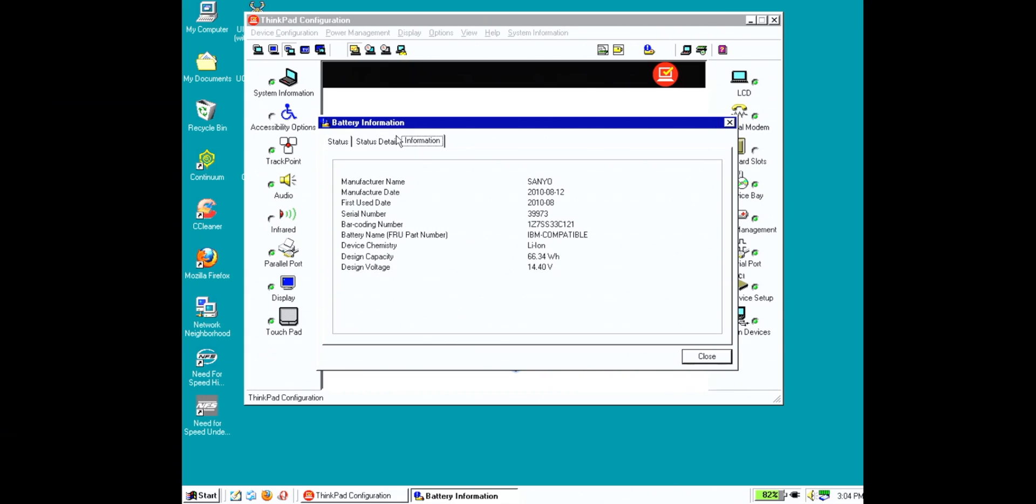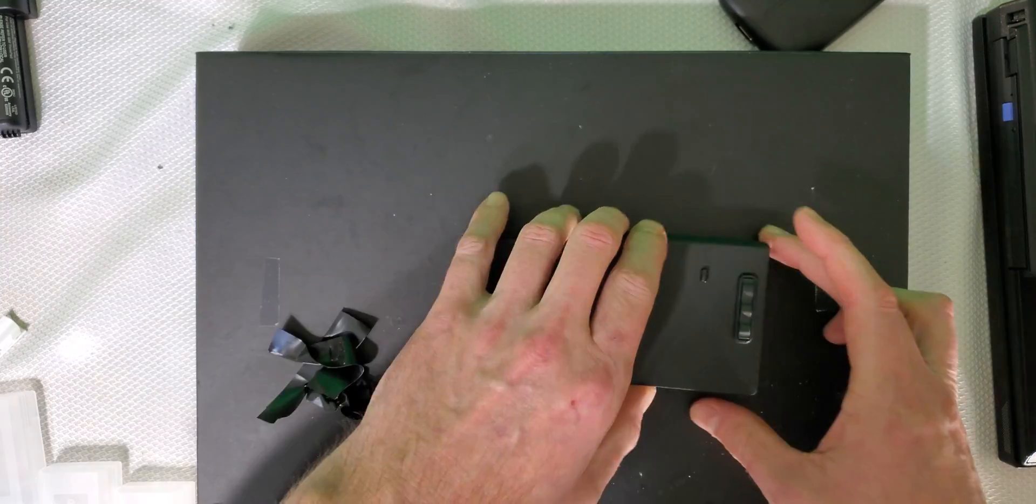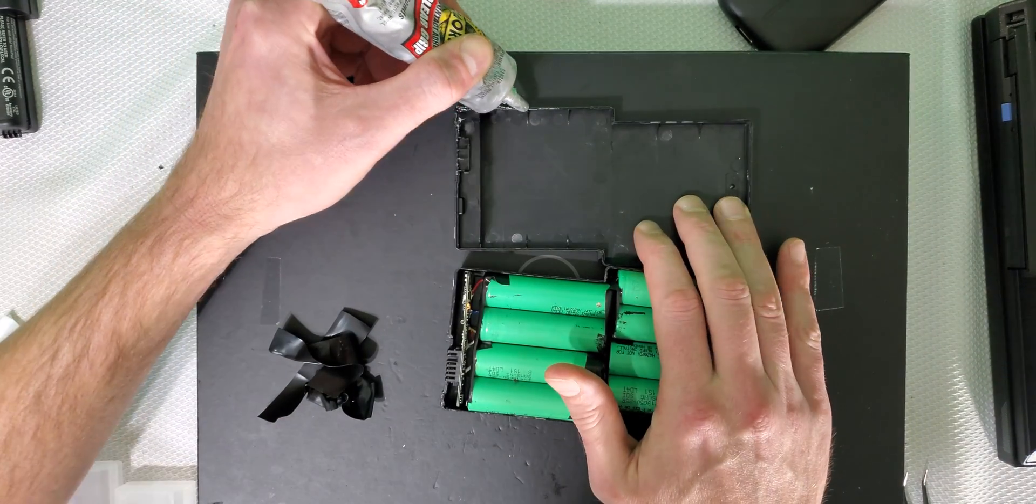With the soldering skills of a three-year-old, we can conquer anything. While electrical tape is a fitting look for this project, we should probably fasten it a little bit better.